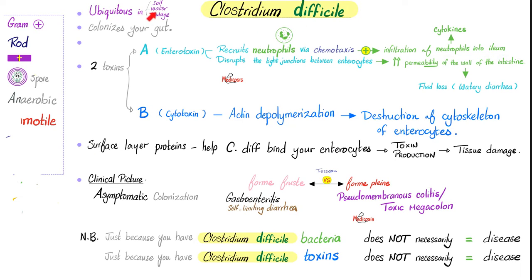Clostridium difficile is everywhere and colonizes your gut. In fact, it was so abundant that in the old days, doctors simply ignored it — healthy people have it, sick people have it, so they didn't care. But later, when we discovered the toxins, the diseases, and the mortality caused by C. diff, we started to pay attention.